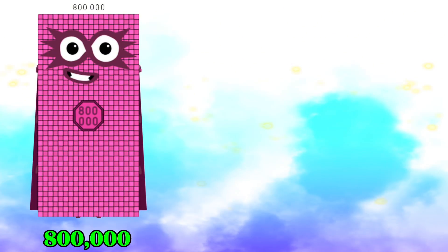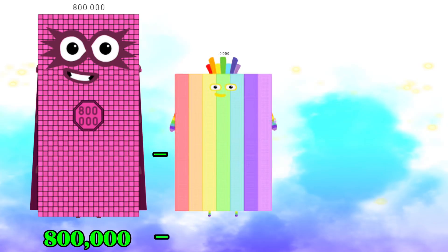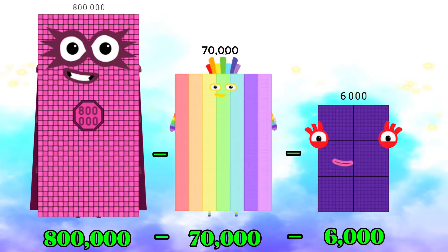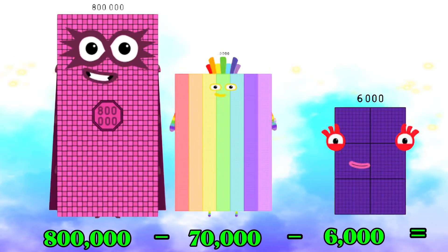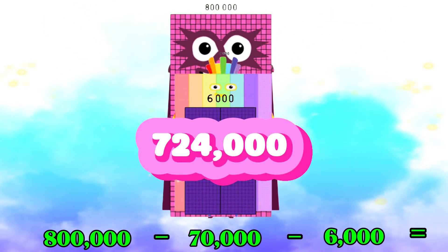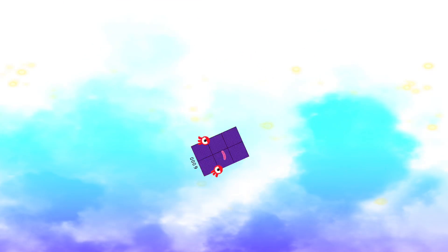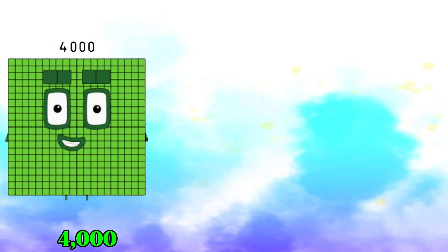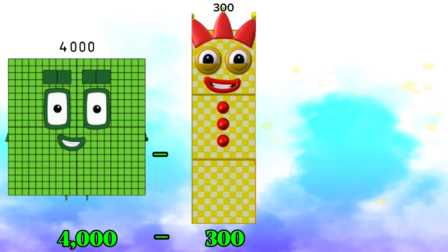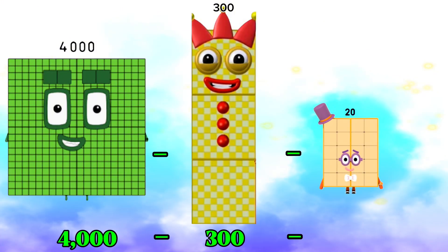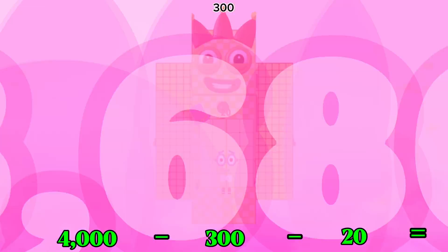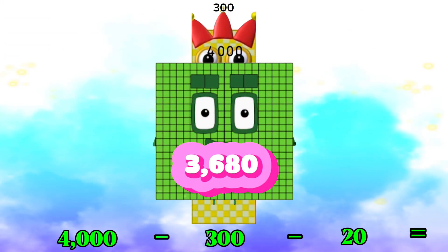800,000 minus 70,000 minus 6,000 is equals to 724,000. 4,000 minus 300 minus 20 is equals to 3,680.